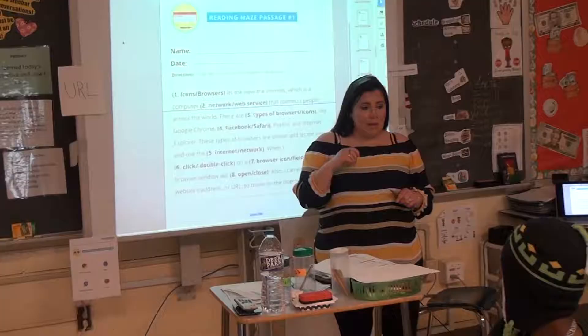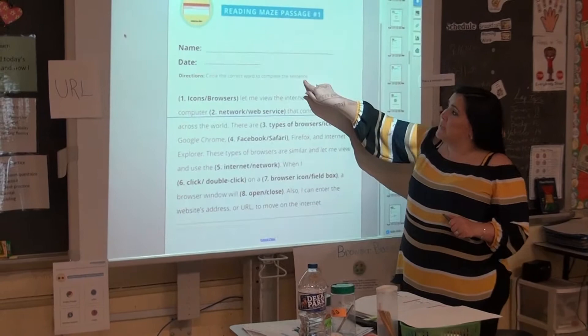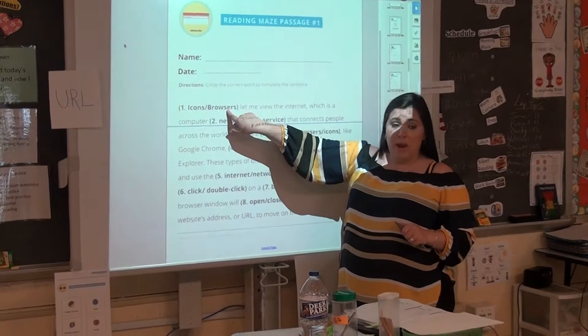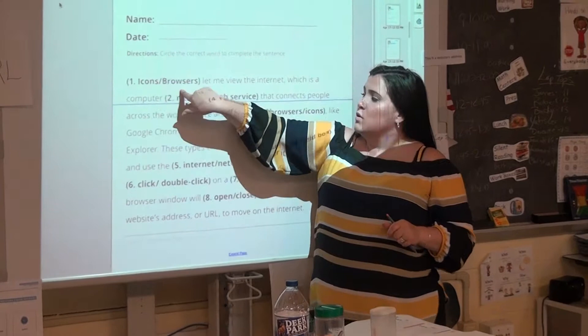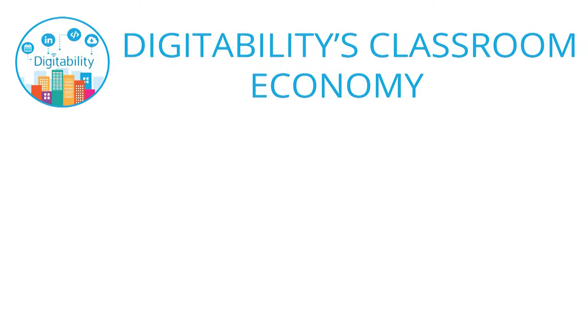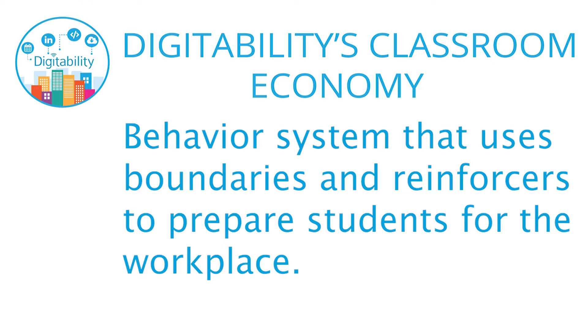You heard Dawn talk about the wide range of student needs. Later in this video, you'll see how Dawn uses differentiation to modify her instruction and meet the needs of those students who have processing delays, limited verbal ability, as well as students who are on a 12th grade reading level but struggle with socialization. DigitAbility's classroom economy is a behavior modification system that uses boundaries and reinforcers to prepare students for the workplace.